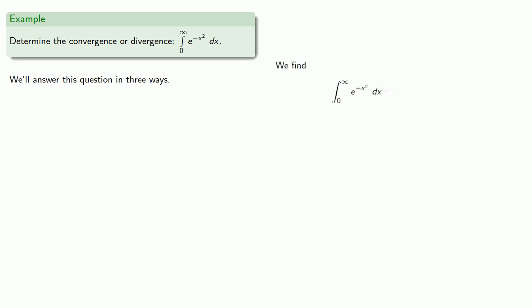So let's see if we can actually find the value of this integral. So it's an improper integral, and so we'll let the upper limit go to infinity. And all we need to do is find an antiderivative for e to minus x squared, except we can't.